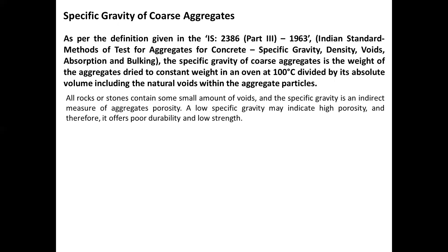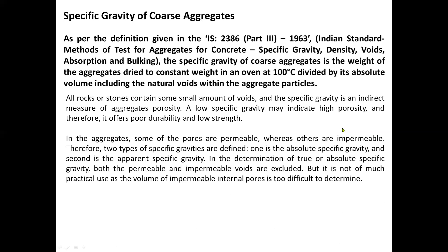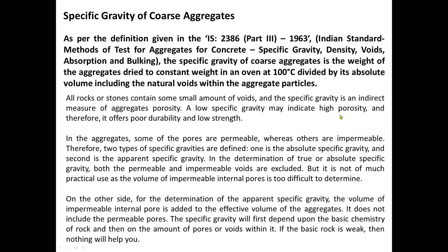A low specific gravity may indicate high porosity, and therefore it offers poor durability and low strength. In the aggregate, some of the pores are permeable whereas others are impermeable. Therefore, two types of specific gravities are defined: absolute specific gravity and apparent specific gravity. In the determination of true or absolute specific gravity, both the permeable and impermeable voids are excluded, but it is not of much practical use as the volume of impermeable internal pores is too difficult to determine. For the determination of apparent specific gravity, the volume of impermeable internal pores is added to the effective volume of the aggregates. It does not include the permeable pores. Specific gravity will first depend upon the basic chemistry of rock and then on the amount of pores or voids within it.